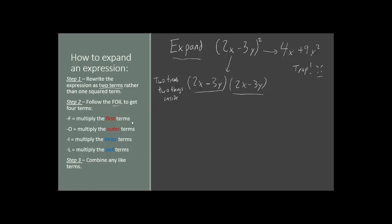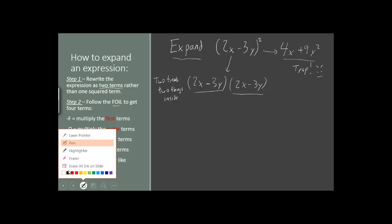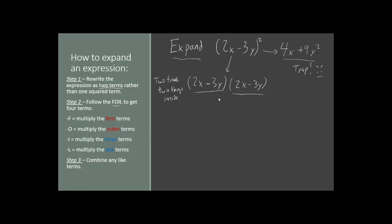The FOIL Method will give you four terms — one for each letter — not just two terms like the trap answer. For the FOIL Method, first multiply the first terms together: this 2x with this 2x. 2 times 2 is 4, and x times x is x squared. That's the first step.